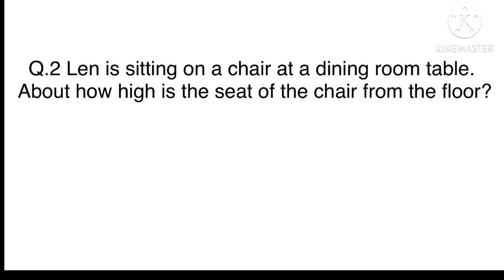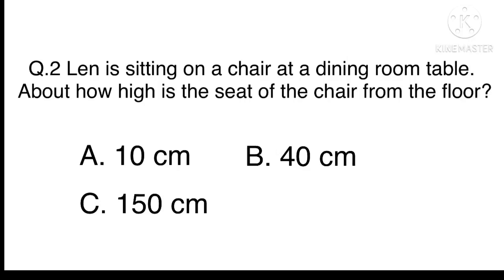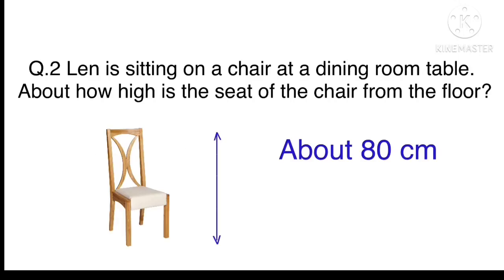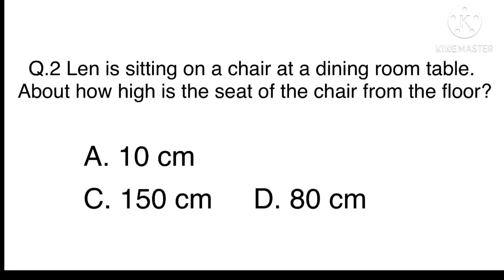Question 2. Len is sitting on a chair at a dining room table. About how high is the seat of the chair from the floor? A. 10 centimetres B. 40 centimetres C. 150 centimetres Or D. 80 centimetres. From the bottom of the chair to the top of the chair is about 80 centimetres. The seat is located about half of 80 centimetres, which is 40 centimetres. The answer is B. 40 centimetres